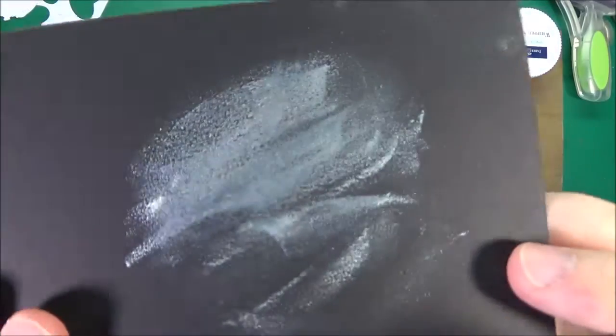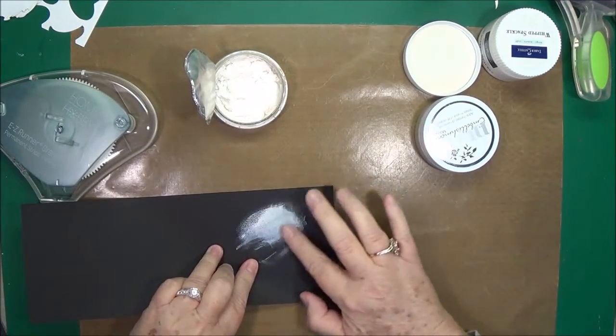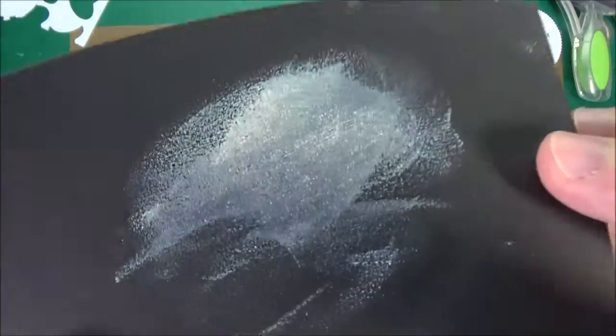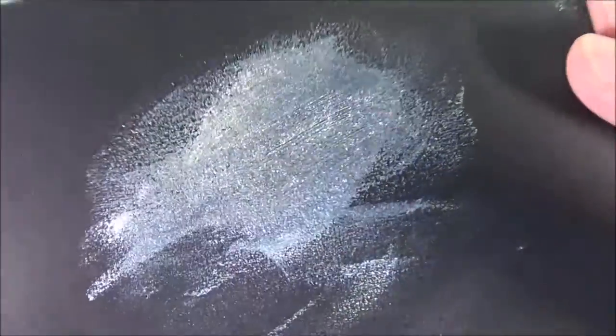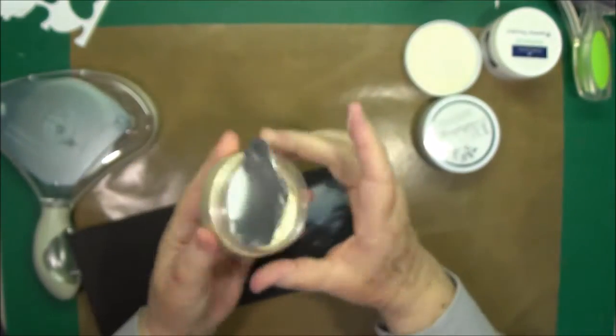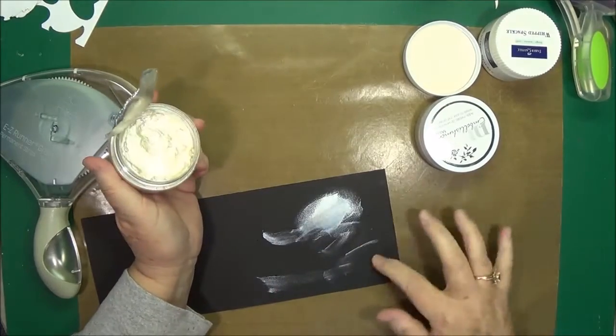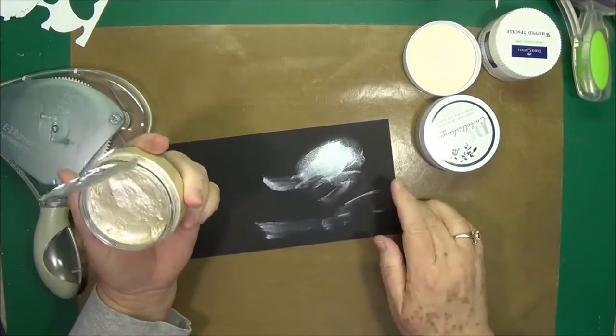Let's see if you can see that shine on there. See the shimmer and the shine, it's beautiful. So you could use this probably either way. It says it is dimensional, so you could use it with your stencil or you could use it just as a paint paste like I did on there.